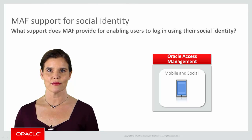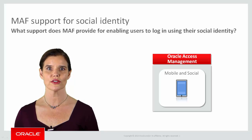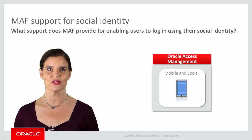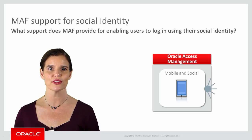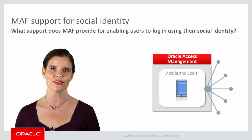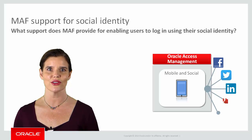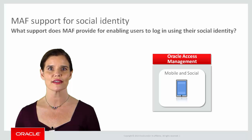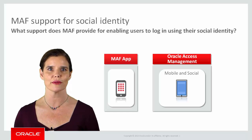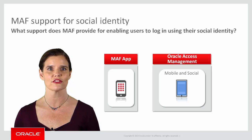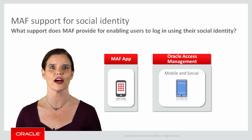When you use Oracle Access Management Mobile and Social, also known as OAMMS for authentication, you can configure Mobile and Social to serve as a relying party when interacting with popular cloud-based identity authentication services such as Facebook, Twitter, LinkedIn, Google, and Yahoo. MAF is tightly integrated with OAMMS so that you can easily configure security in your MAF applications and enable users to authenticate by using their credentials from a trusted social identity provider.